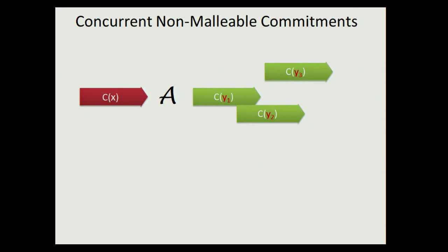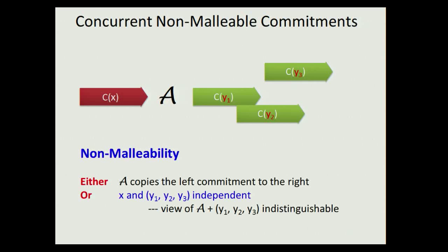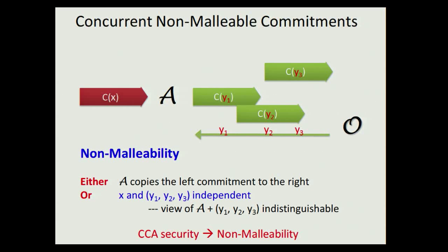In the literature there is a very closely related notion called concurrent non-malleable commitment. Non-malleable commitment requires that the adversary should not be able to commit to any related values with the commitment it receives. This definition can be equivalently formulated as allowing the adversary access to the committed value oracle at the end of the whole execution and getting all the committed values back in parallel. So immediately, CC secure commitment is stronger and implies non-malleability.